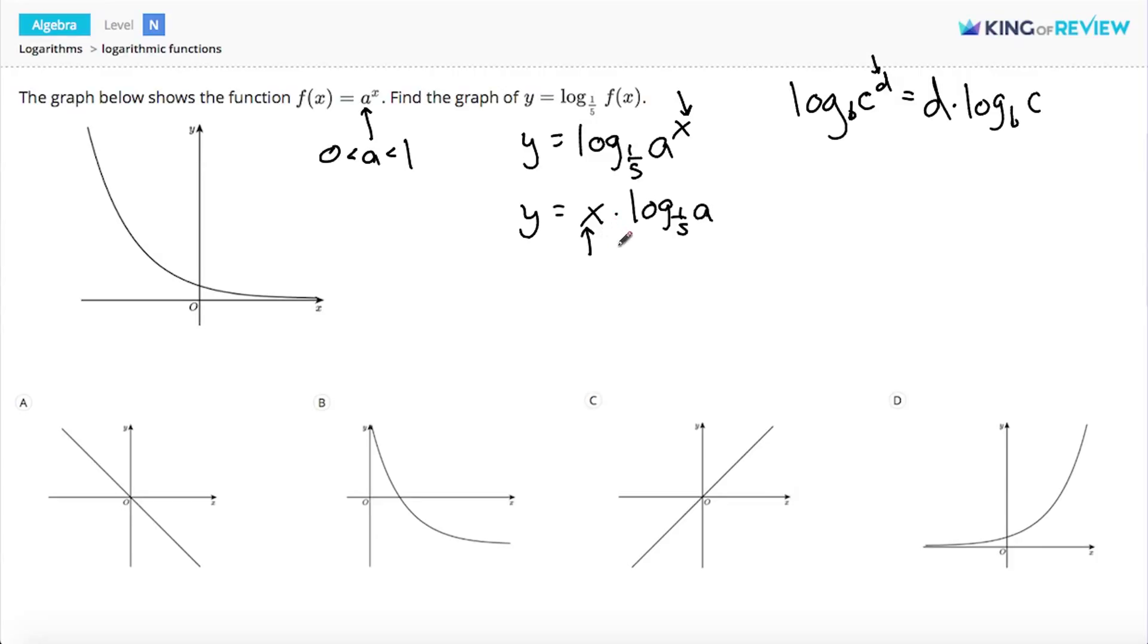The log base 1 fifth of a is just going to be some number, depending on what a is. So we're going to have y equals some number times x. That's a linear equation. So right away, graph b and graph d are out, because they do not show linear functions.